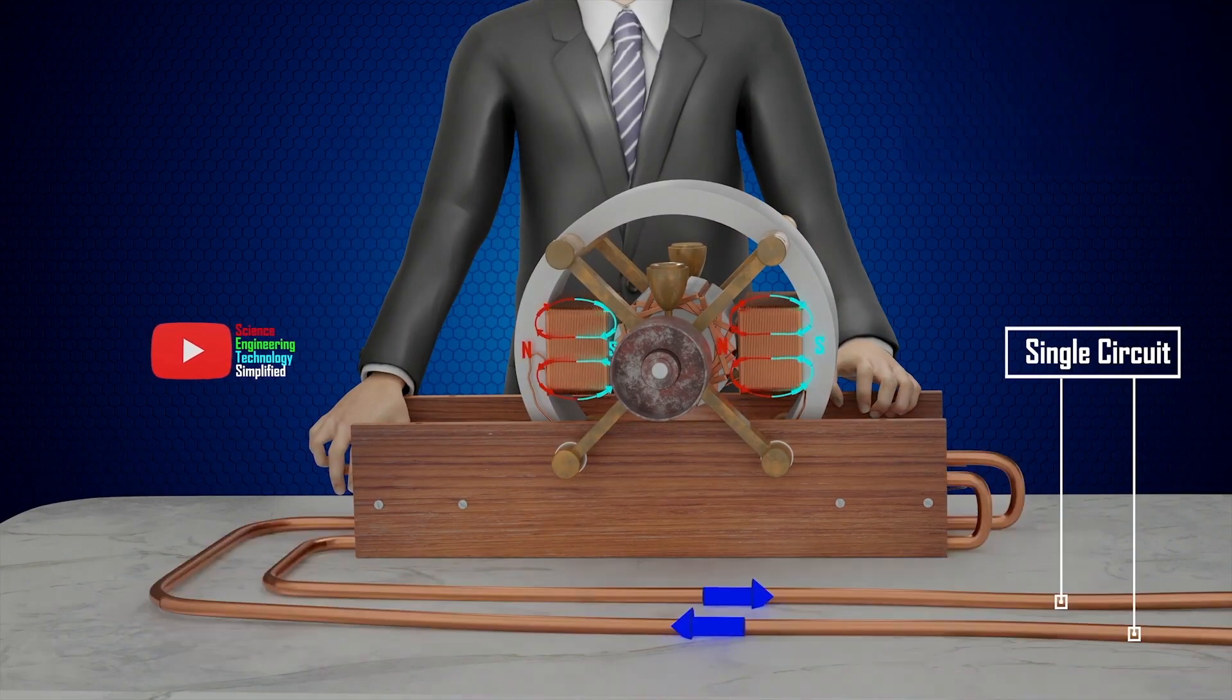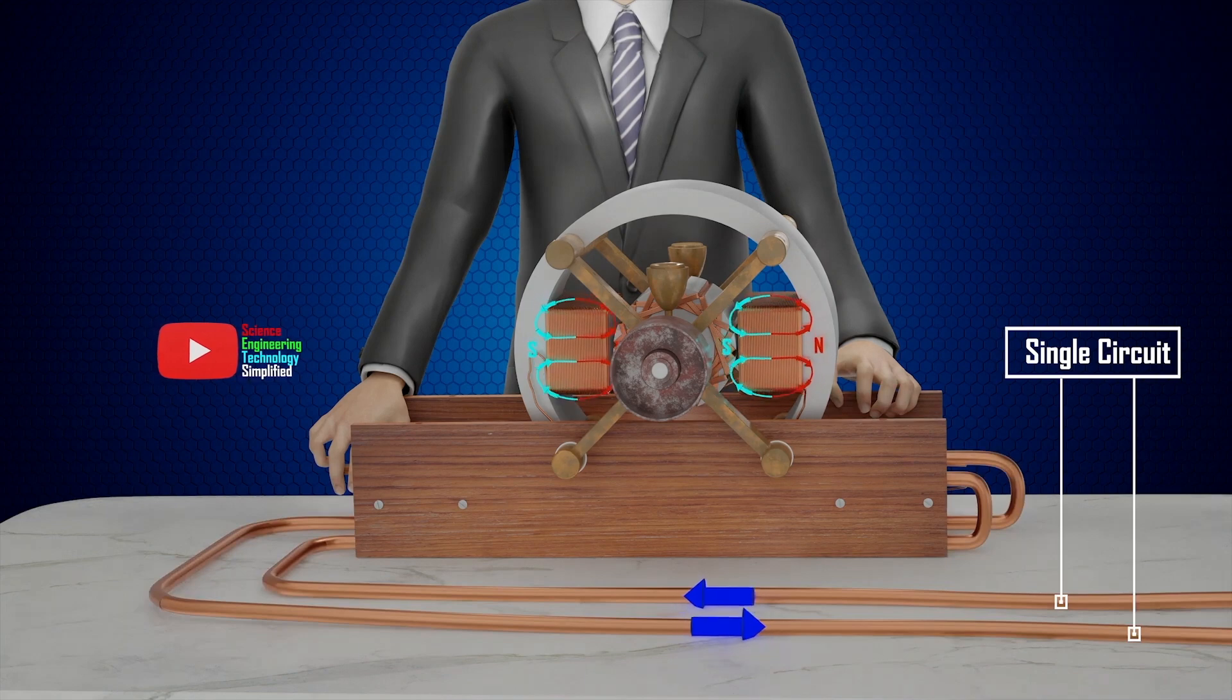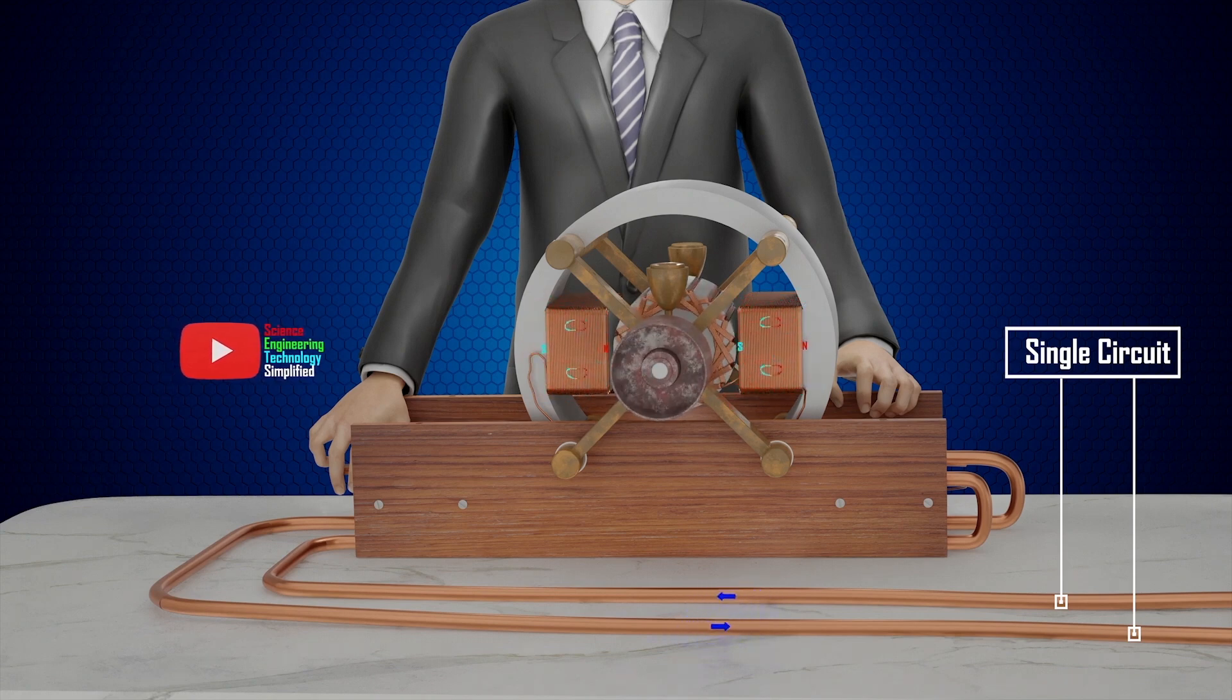Each time the current reversed its direction, it reversed the north and south poles of the motor's magnetic field as well. The motor, therefore, vibrated but did not turn.